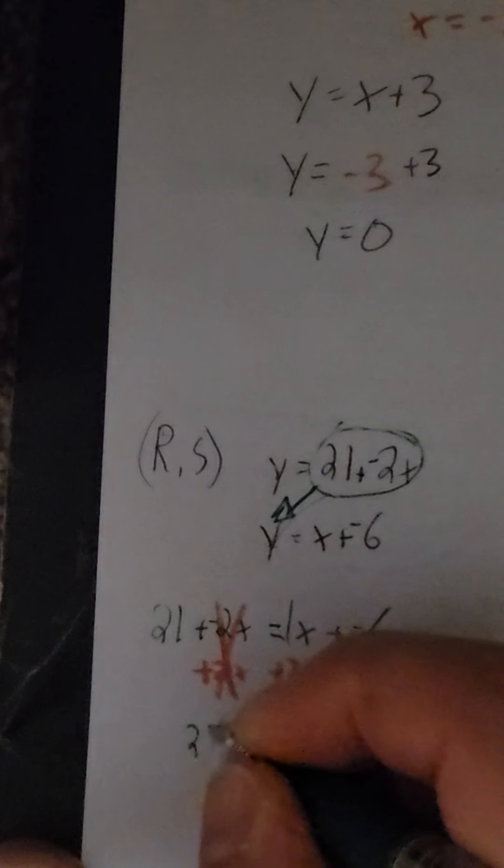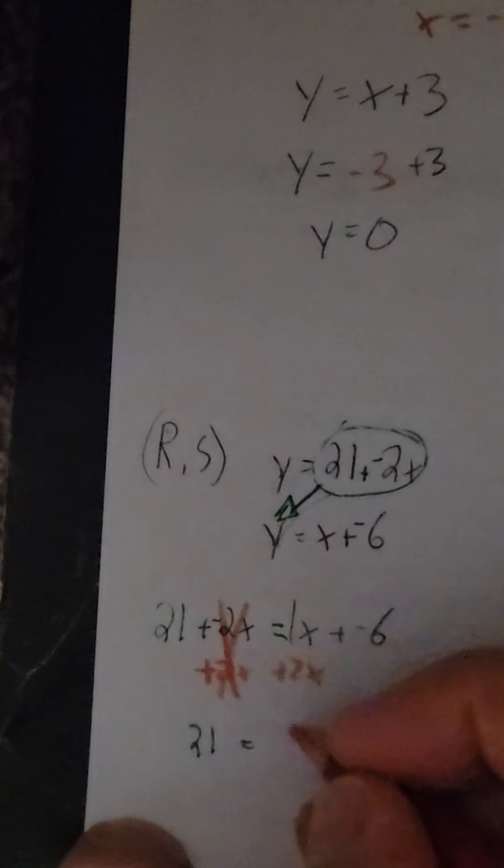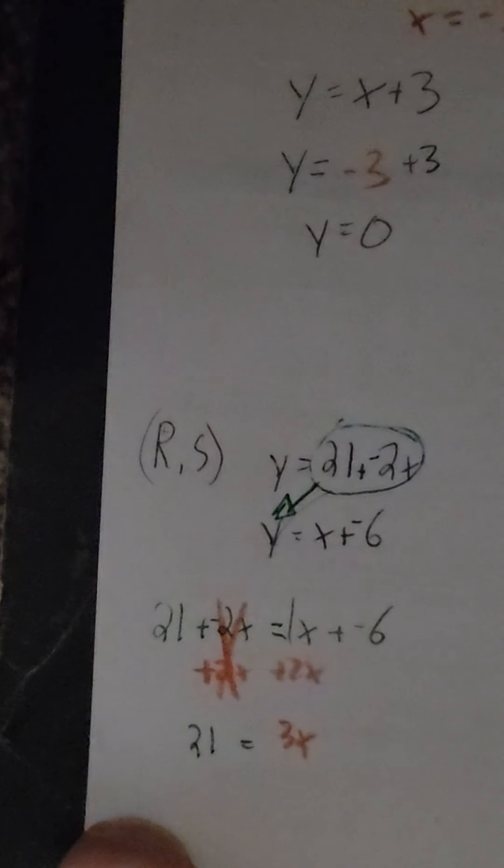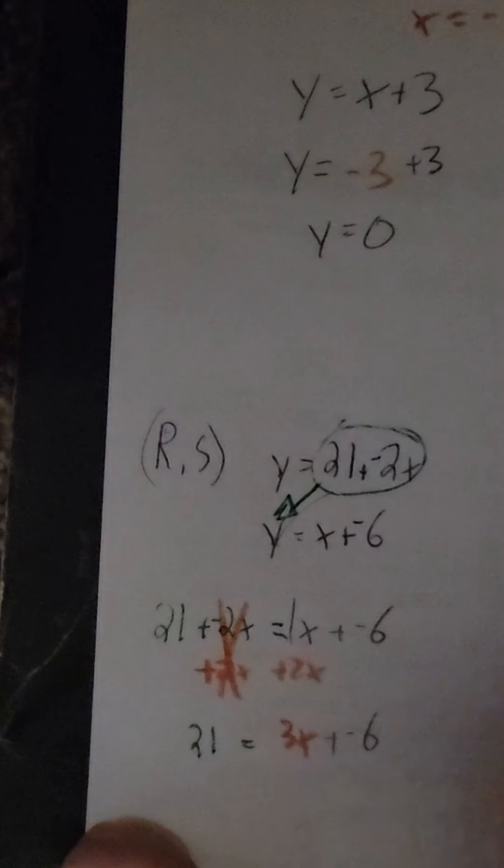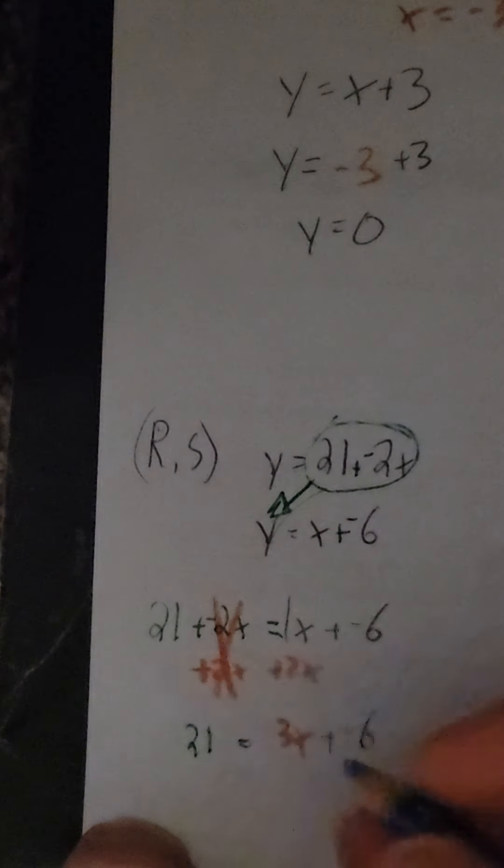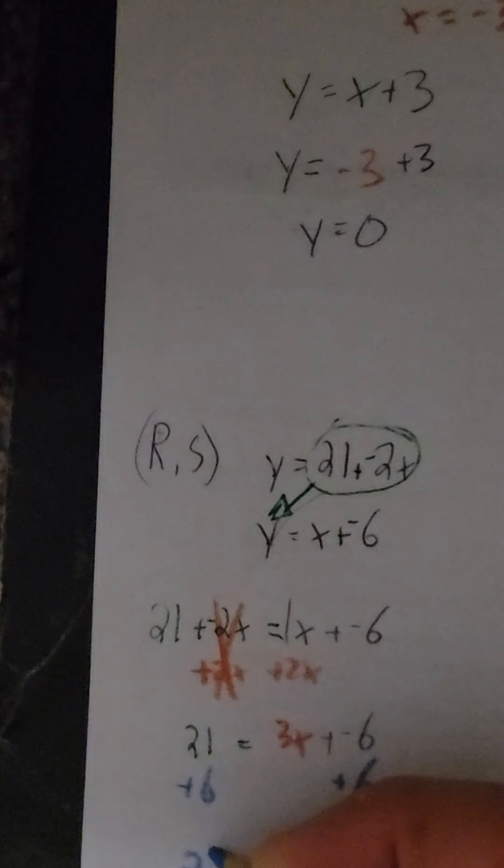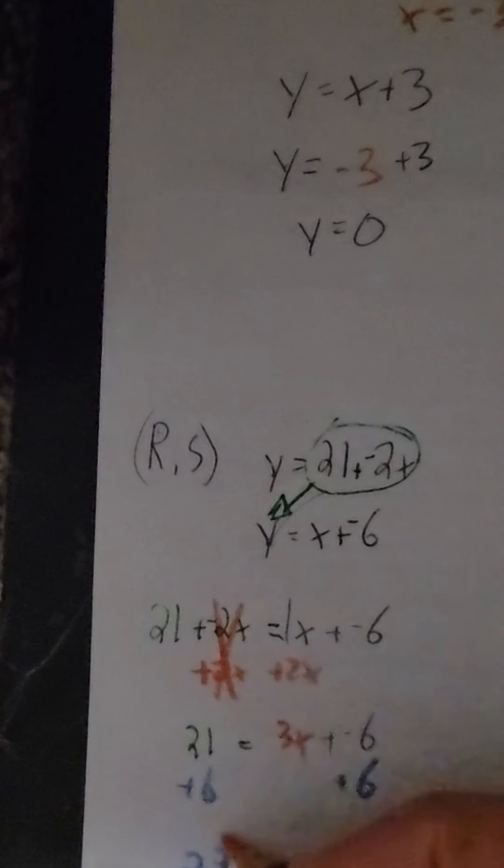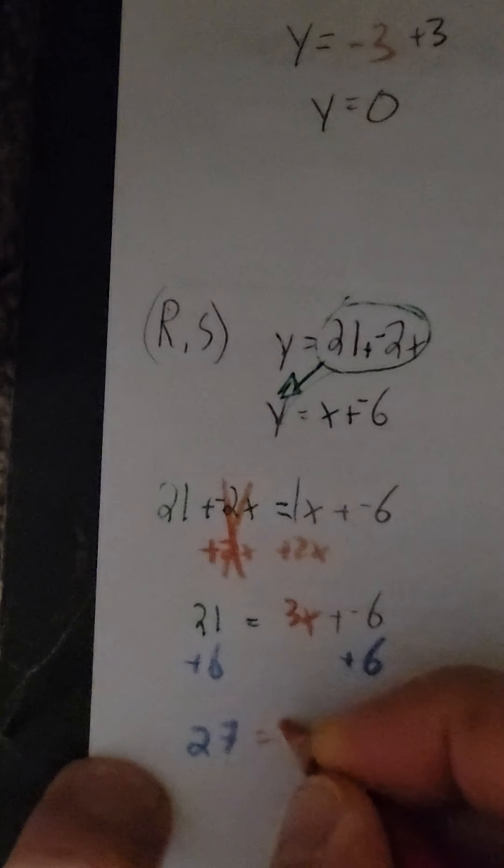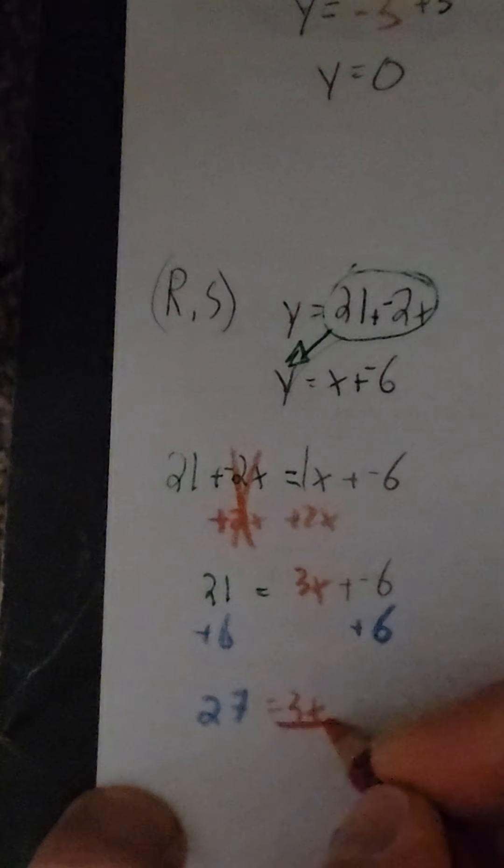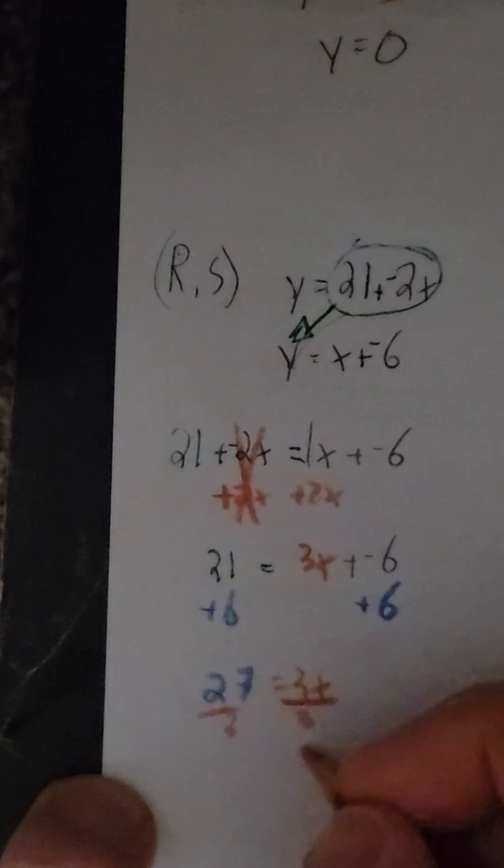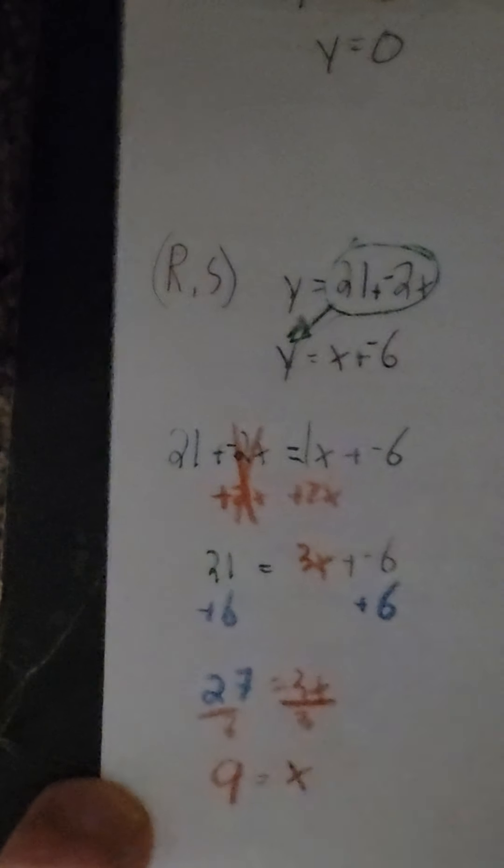Which I'm left with. 21 equals 3x plus a negative 6. So, I'm going to get rid of that negative 6 by adding 6. I'm left with 27 equals 3x. Which case, I will divide by 3. Perfect. So, x equals 9.